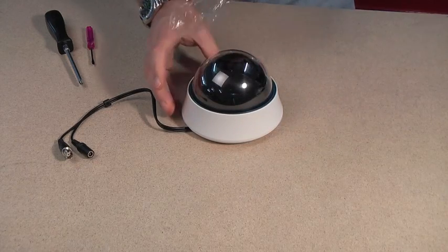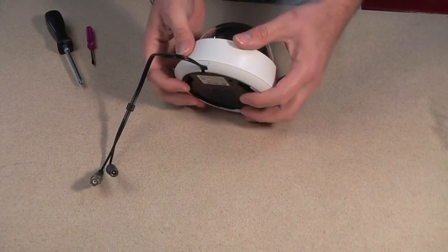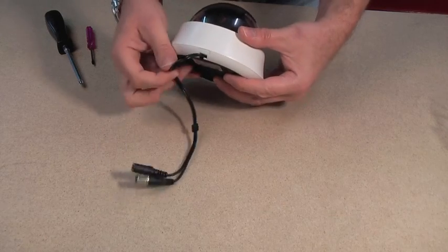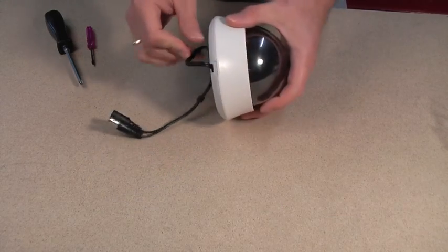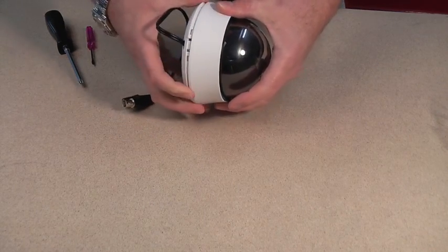First of all, remove the protective covering from the dome, and then locate the small button by where the wire joins the body. Push it in, and you can now remove the outer collar and the dome from the camera body.